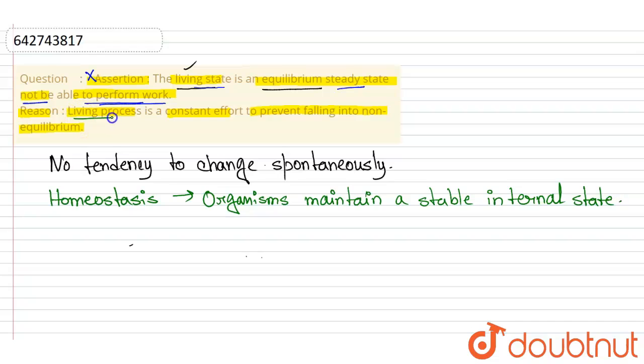Here in homeostasis, the reason says living process is a constant effort to prevent falling into non-equilibrium. This one is also incorrect because the main reason or the main purpose of homeostasis is to maintain the equilibrium state. One simple example: what does insulin do in our body?